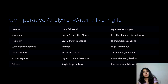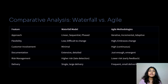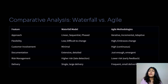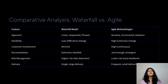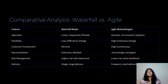Let's compare waterfall and agile. Approach: waterfall is a linear, sequential, top-down model, whereas agile is an iterative, interactive model where members constantly collaborate. Flexibility: in the waterfall model, flexibility is very low because requirements are fixed and frozen in the first stage. In agile, flexibility is very high — you can change or update requirements anytime, multiple times. Customer involvement: in waterfall, it is very low — interaction only happens in the requirements stage.